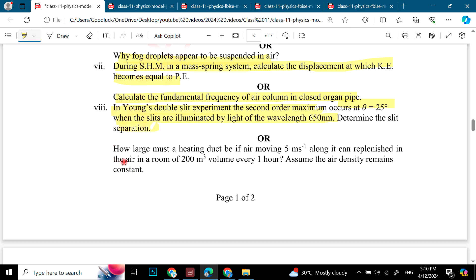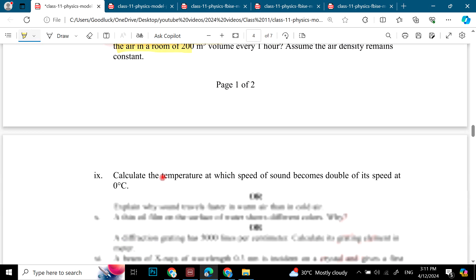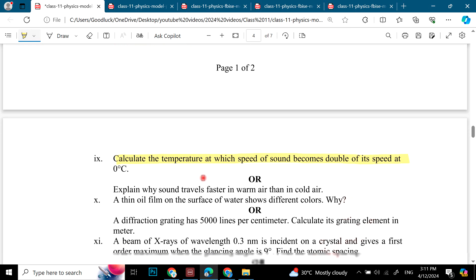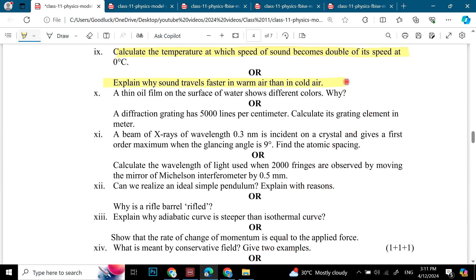How large must a heating duct be if air moving 5 meter per second along it can replenish the air in a room of 200 meter cube volume every one hour? Assume the density remains constant. Then we have: calculate the temperature at which speed of sound becomes double of its speed at 0 degree. Explain why sound travels faster in warm air than in cold air. A thin oil film on the surface of water shows different colors, why?